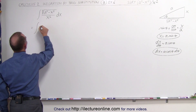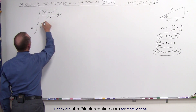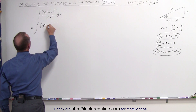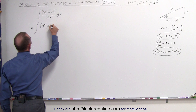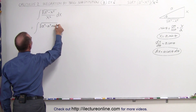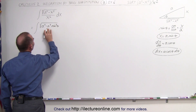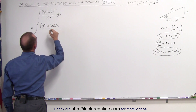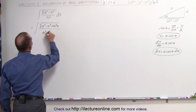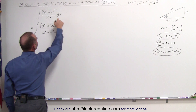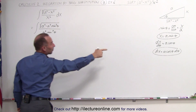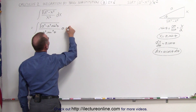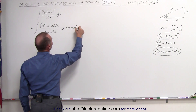This is now equal to the integral of the square root of a squared minus a squared times the sine squared of theta, since x is equal to a sine theta. In the denominator, we also get a squared times the sine squared of theta, and dx can now be written as a times the cosine of theta times d theta.